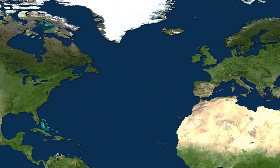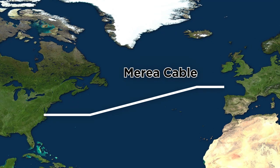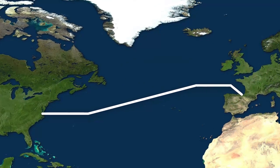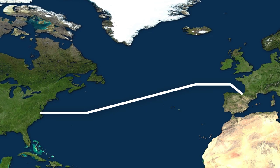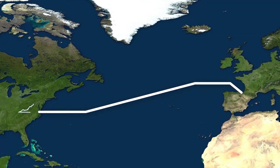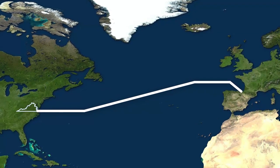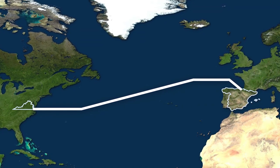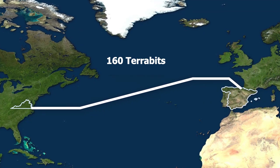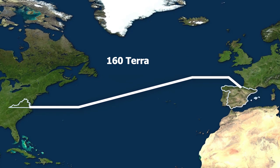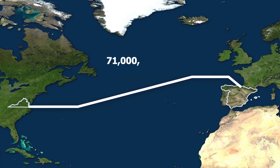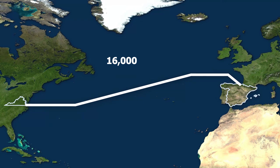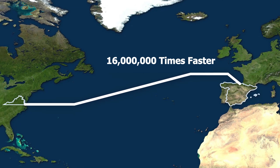Some of the newer and most cutting edge cables, such as the MAREA cable — which in Spanish stands for high tide — are even faster. This cable, owned and funded by Microsoft and Facebook, connects Virginia Beach, Virginia in the United States to Bilbao, Spain, and is capable of data transmission rates of up to 160 terabits per second. This is the equivalent of streaming 71 million HD videos at the same time, and it is 16 million times faster than the average home internet connection.